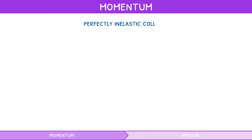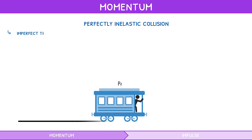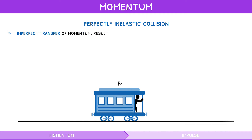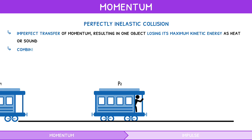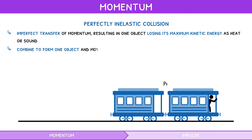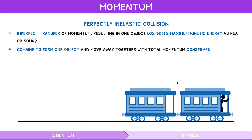During a perfectly inelastic collision, there is an imperfect transfer of momentum, resulting in one object losing its maximum kinetic energy in the form of heat or sound. The two objects combine to form one object and move away together, with total momentum conserved. Because the two objects combine into one, the formula changes to: mass 1 times initial velocity 1, plus mass 2 times initial velocity 2, equals (mass 1 plus mass 2) times final velocity.